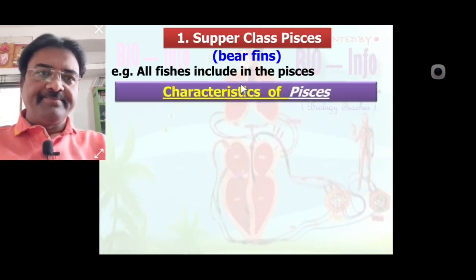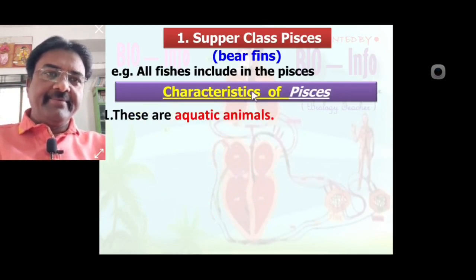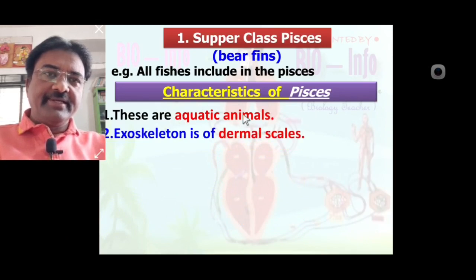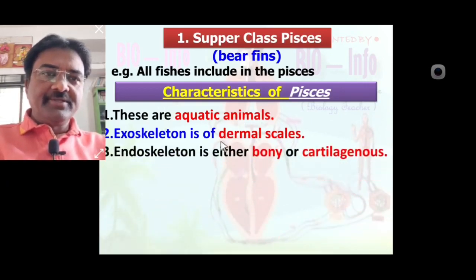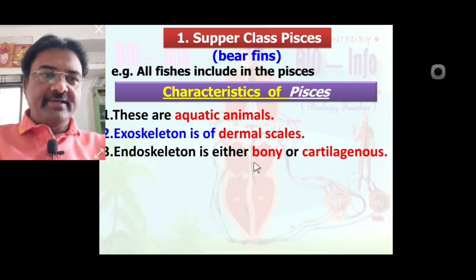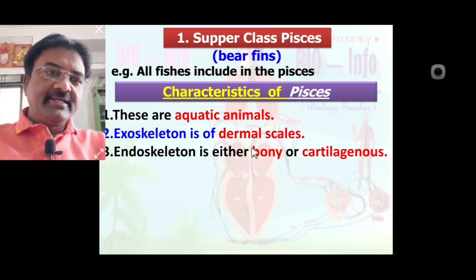We learn different characteristics of Pisces. Number one: these are aquatic animals — all Pisces are aquatic. Exoskeleton is dermal — scales are seen. Endoskeleton is either bony or cartilaginous. Some fish endoskeleton is made by bones, so they are called Osteichthyes.